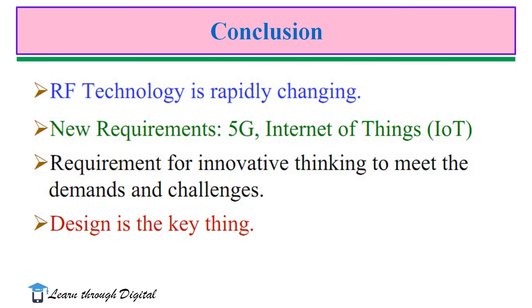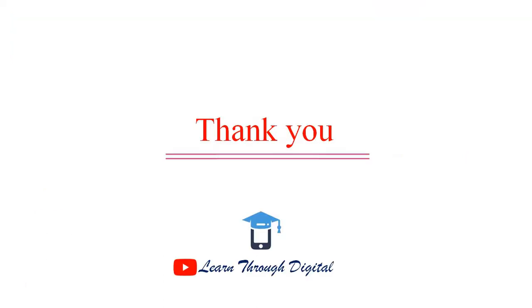To conclude, technology is rapidly growing and there are a lot of changes in the development of antennas and wireless communication systems. The development of 5G and IoT — Internet of Things — are basic requirements for innovating to meet demands and challenges. The major key focus is the design of antennas and microwave components. Thank you.